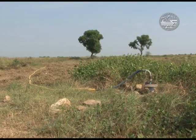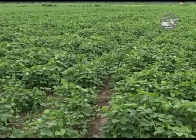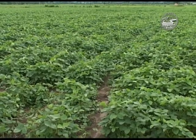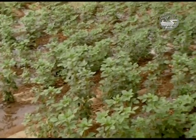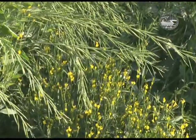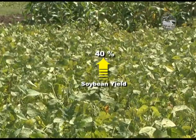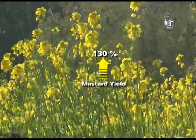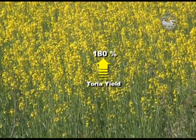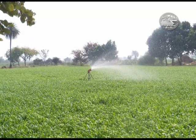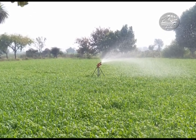To minimise the risk of crop failure under rain-fed conditions, supplemental irrigation from harvested rainwater in a farm pond served as a boon for farmers of the Bundelkhand region. Providing supplementary irrigation to soya bean at the pod filling stage, pre-sowing irrigation for mustard and toria at 30 days after sowing increased the yield of soya bean by 40%, mustard by 130%, and toria by 180%. The use of a rain gun was the most effective irrigation technique to promote water efficiency and increase crop yield.